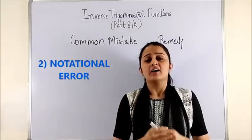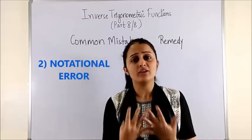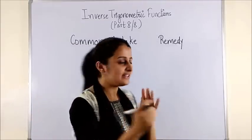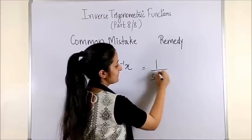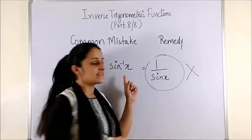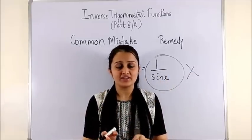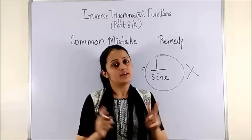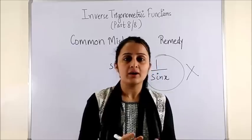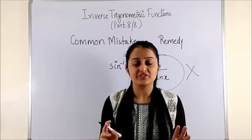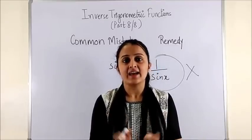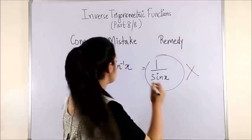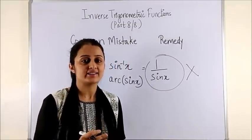Second: notational error. This is a mistake I see students making all the time. If I ask what is sin inverse of x, somebody would definitely say it is the same as 1 by sin x. The answer is no — sin inverse x and 1 by sin x are two different functions. The remedy: highlight the difference between the two. 1 by sin x has a graph for cosecant x, which is completely different from sin inverse x. You can also use the notation arc sin x, arc cos x, arc tan x, etc.